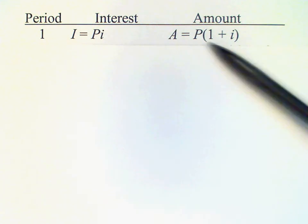I've got a little chart here that will help us keep track of what's going on. In the first period we earn some interest and it's just the original principal times the interest rate. The time is just one because this is interest rate per period. Then we add that to the original principal and we get A equals P times one plus i.